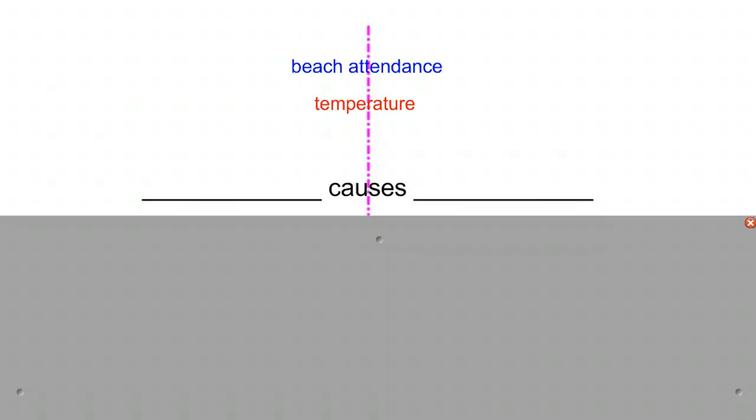Looking at how to set up a graph here, if you had beach attendance and temperature, you would have to figure out which one is most likely your explanatory variable. Now, to suggest that temperature causes people to go to the beach seems to make sense. Warmer temperatures, whatever.